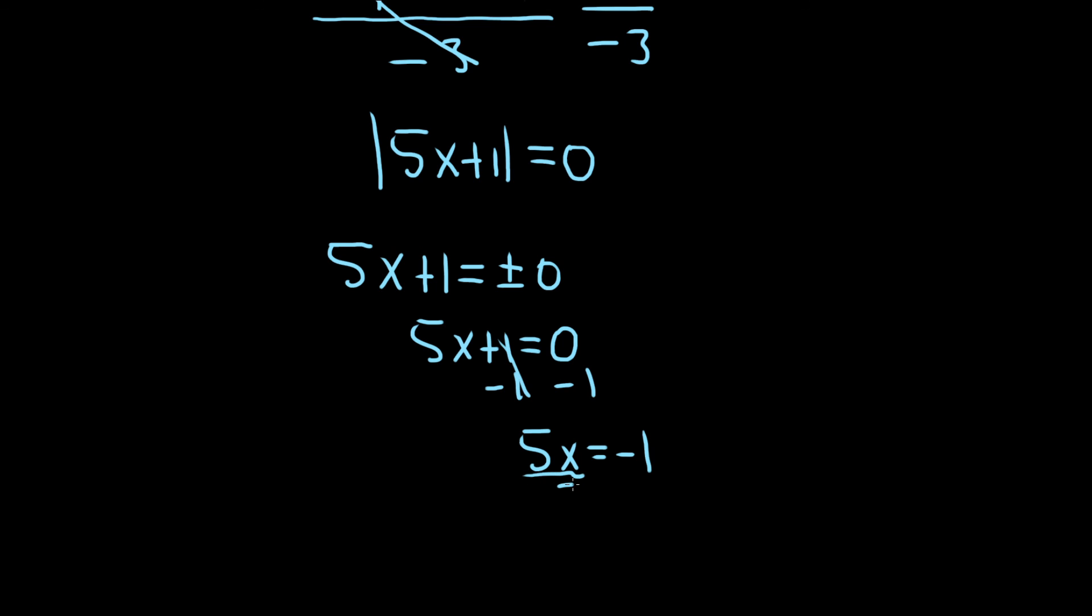Then just divide by 5. The 5s cancel, and so we're left with x equals negative 1 over 5. That'll be the final solution to this problem.